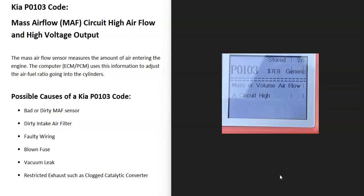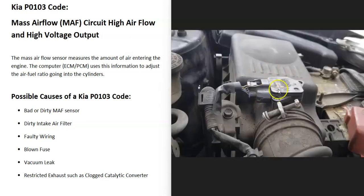Today I'm talking about a Kia with the P0103 code — what it is and how you go about fixing it. The P0103 is a mass airflow circuit high airflow and high voltage output code. There's a sensor called the mass airflow sensor, or MAF sensor, located up near the air intake box. It measures all the air going into the engine, and the onboard computer uses this information to adjust the air-fuel ratio mixture going into the cylinders.